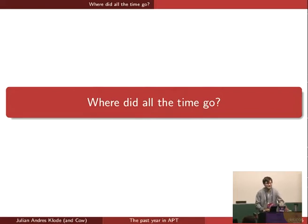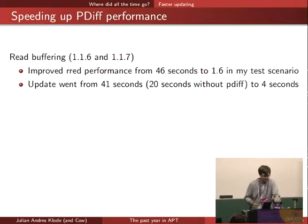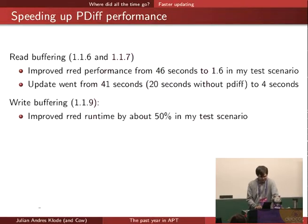That was it for security. Another very interesting topic was performance. You might have noticed that apt got a lot faster between 1.1 and 1.2. The obvious reasons were we forgot buffering in the pdiff applying, and introduced read buffering in 1.1.6 and 1.1.7, which made the update take four seconds instead of 41 seconds. In 1.1.9 we introduced write buffering, which further improved the runtime.